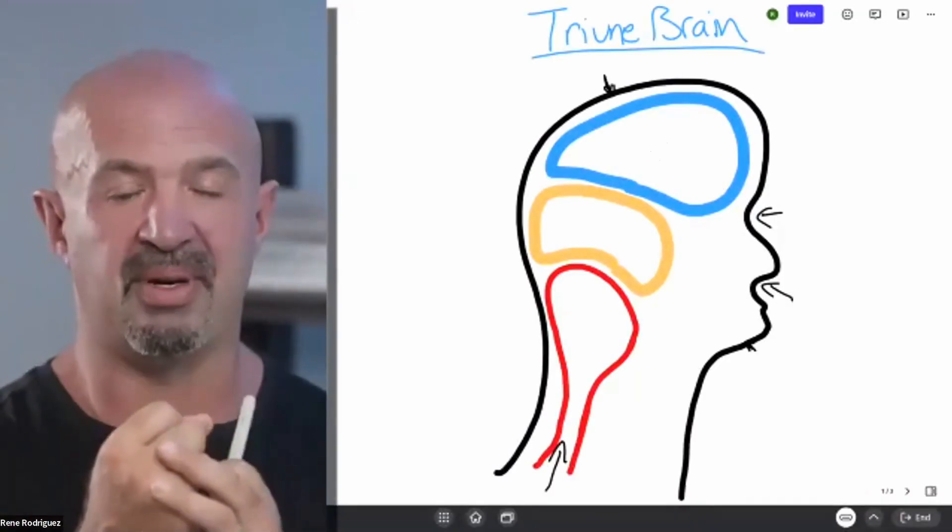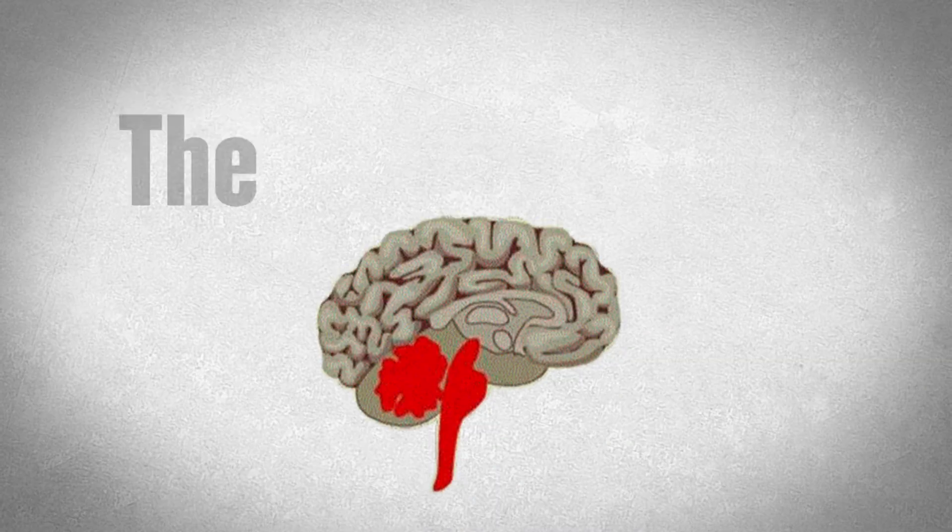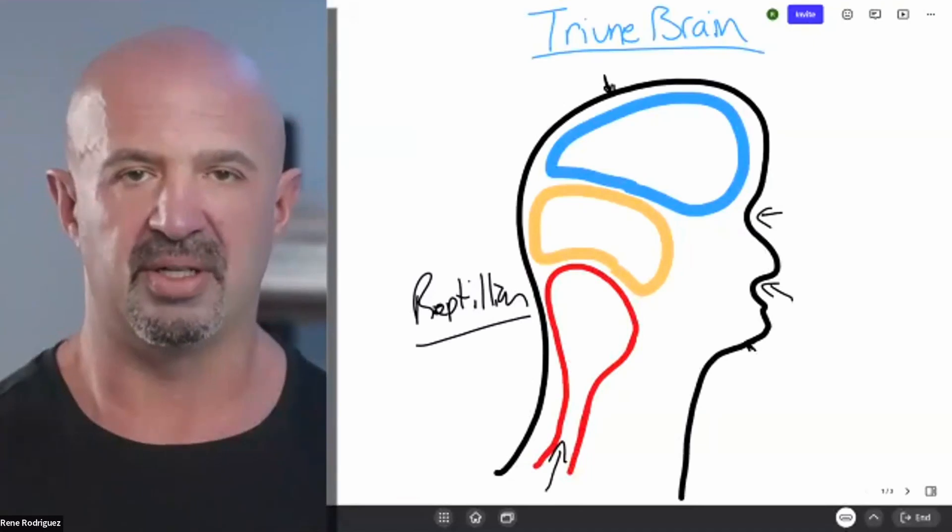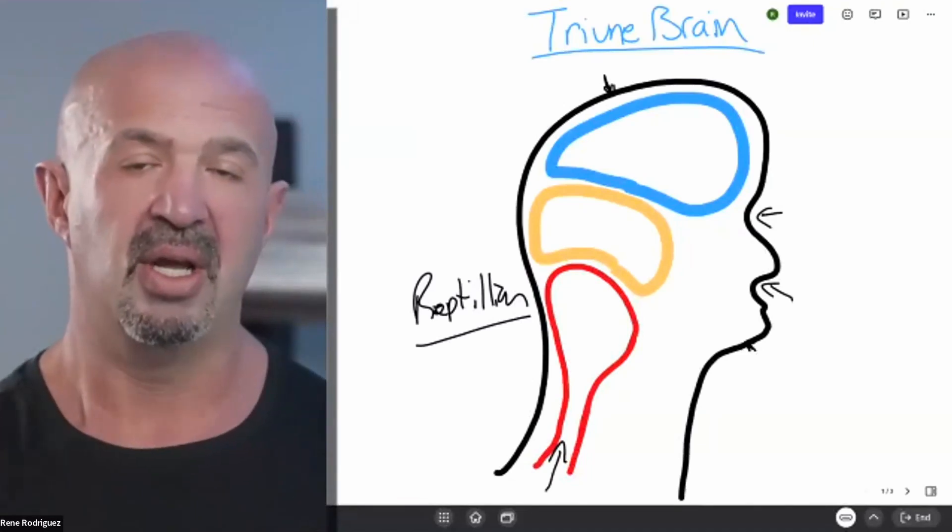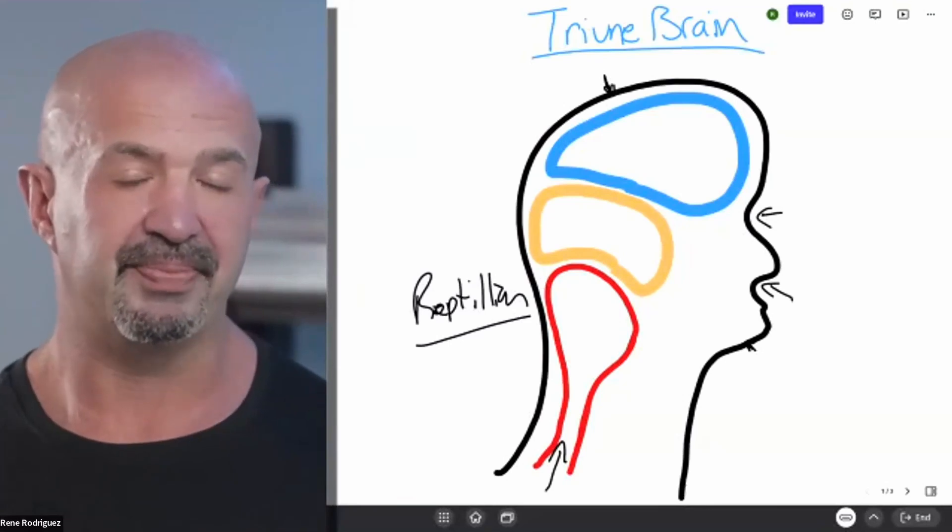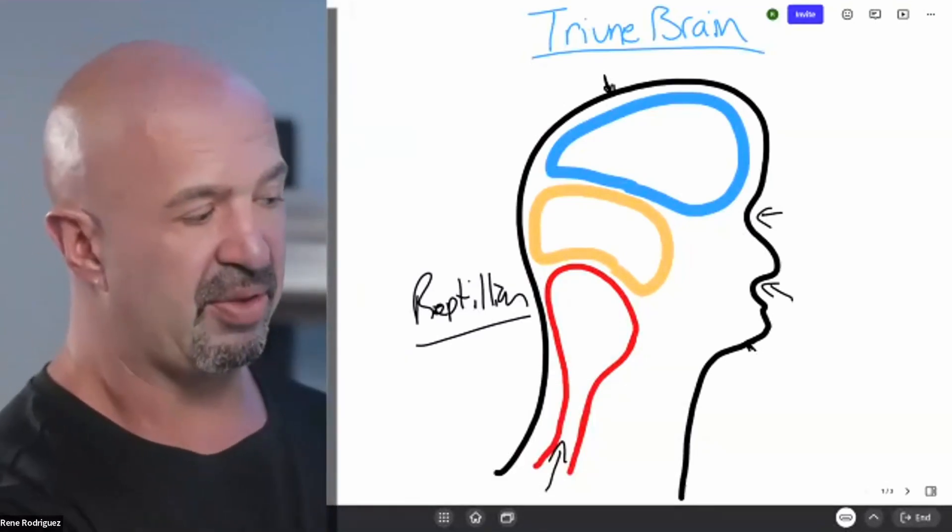The reptilian brain is in charge of all your autonomic functions. Your breathing, your heart rate, your digestion, all the things that need to happen for you to survive. And so because it carries that burden of survival, it also carries another authority, which is full control. And it's given three tools.